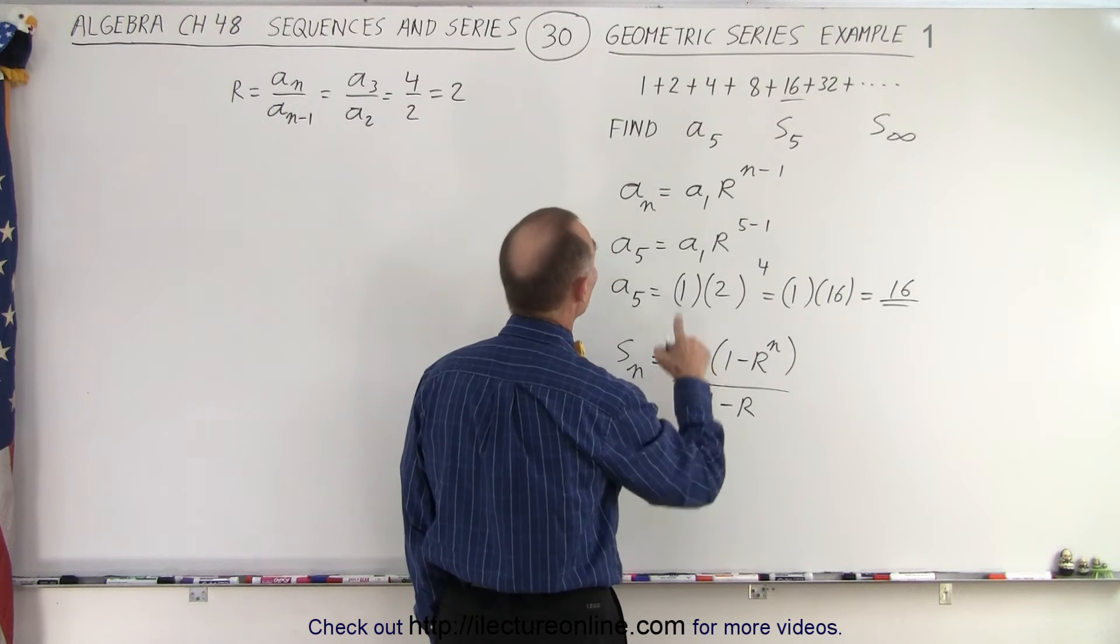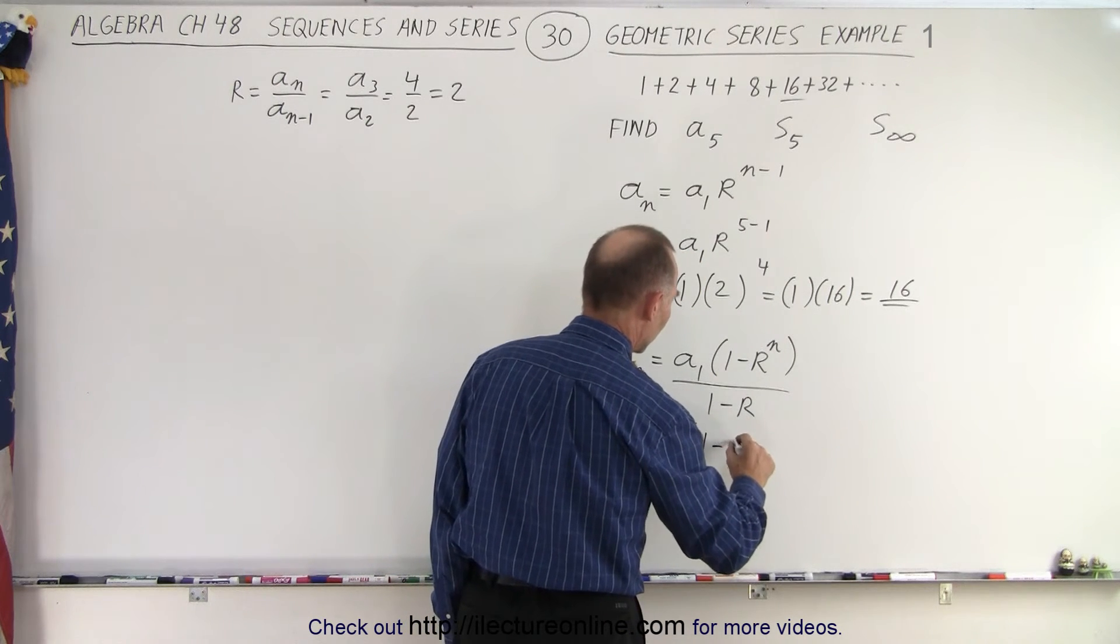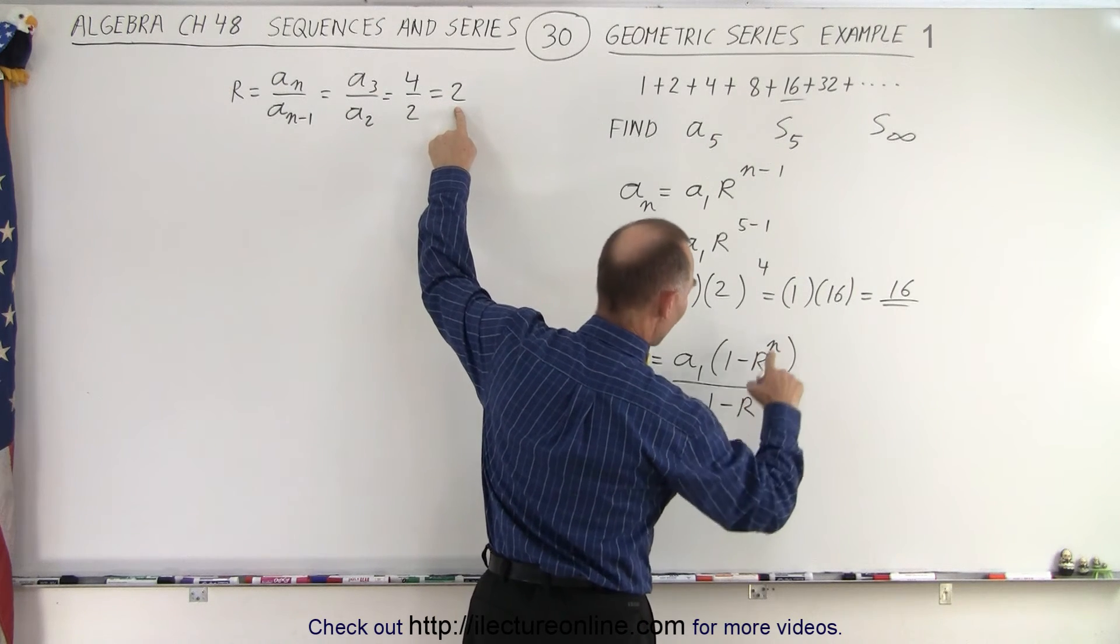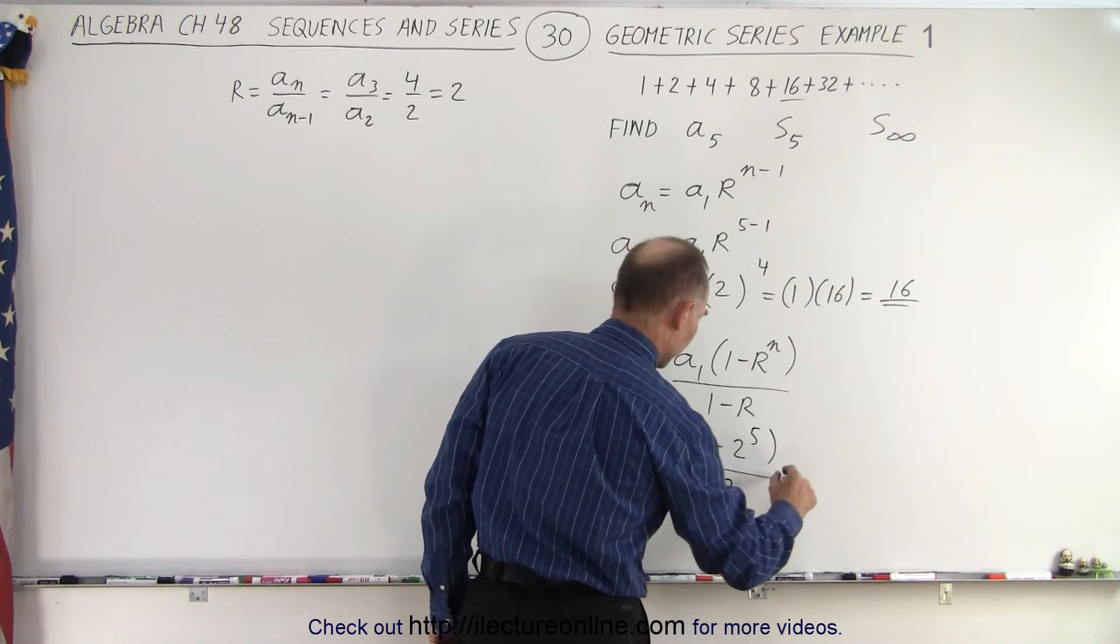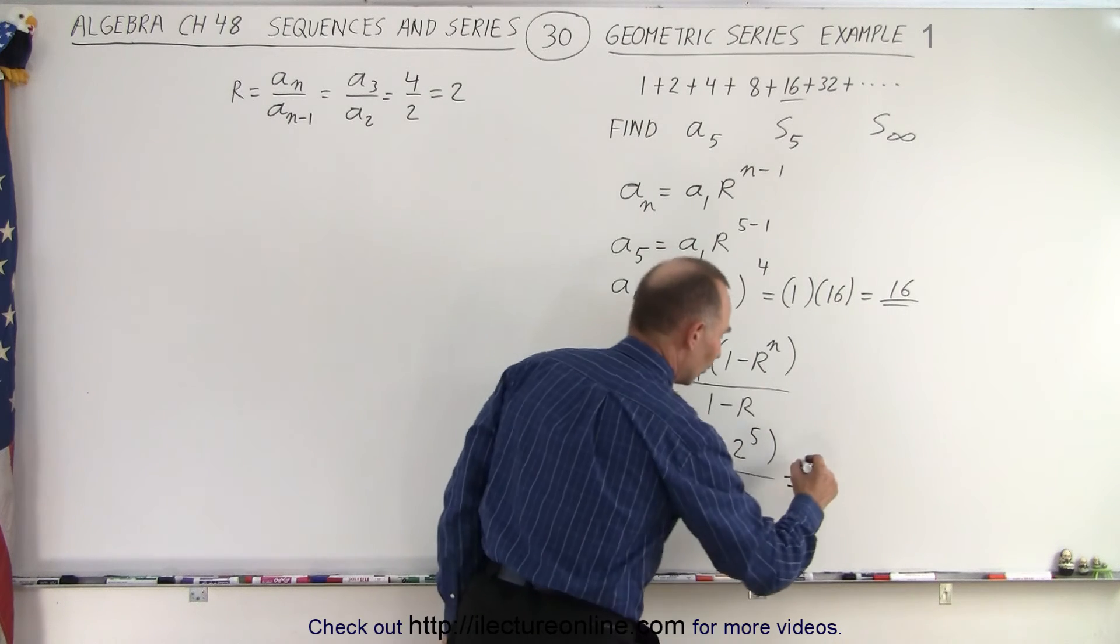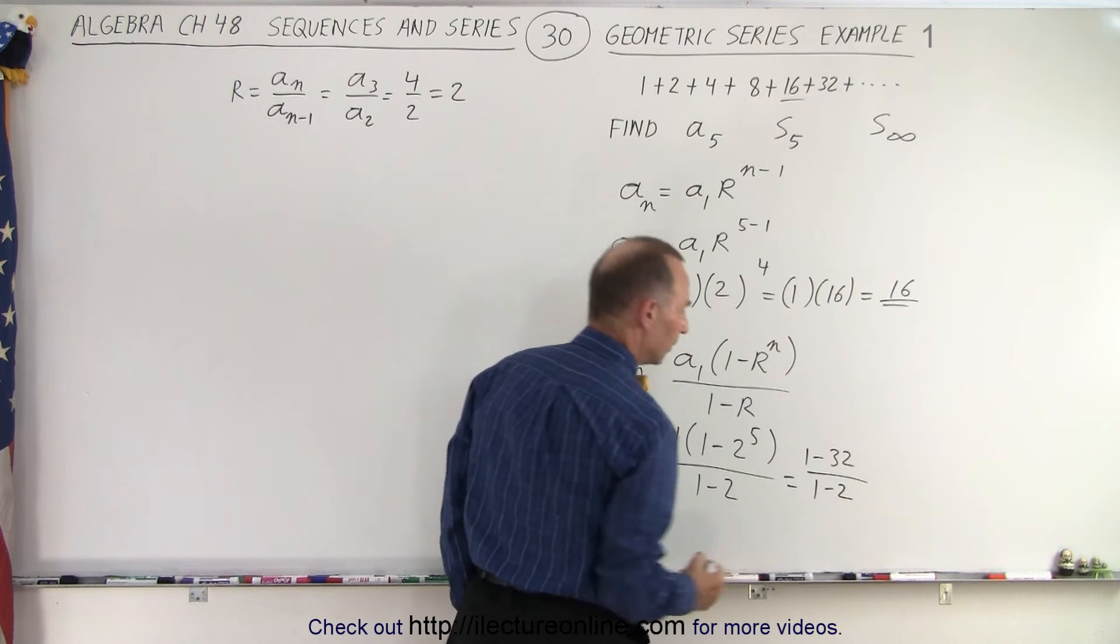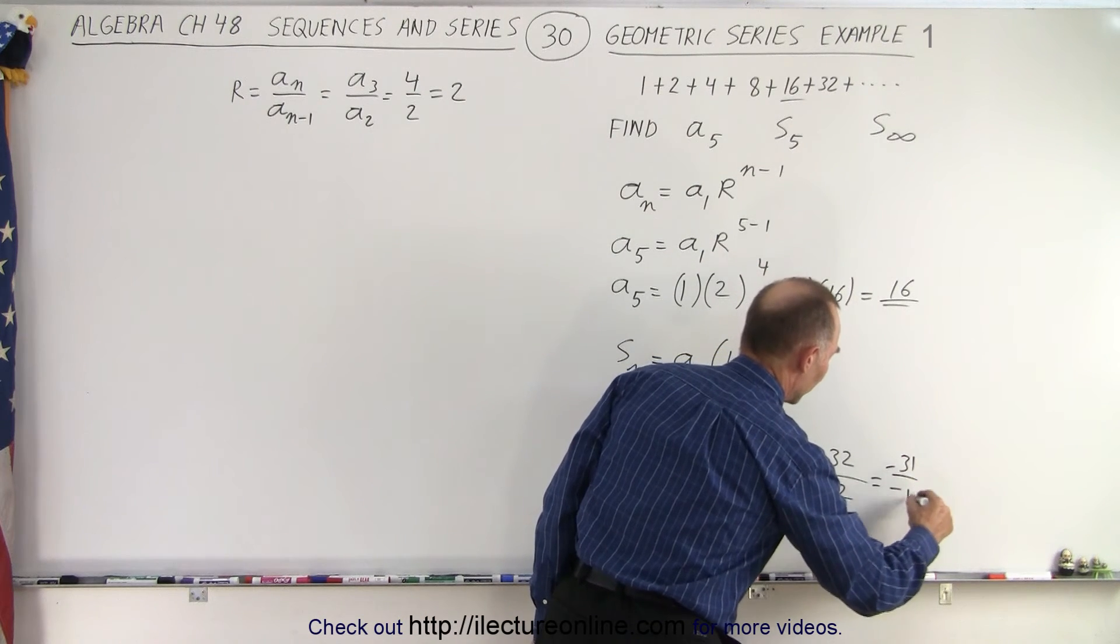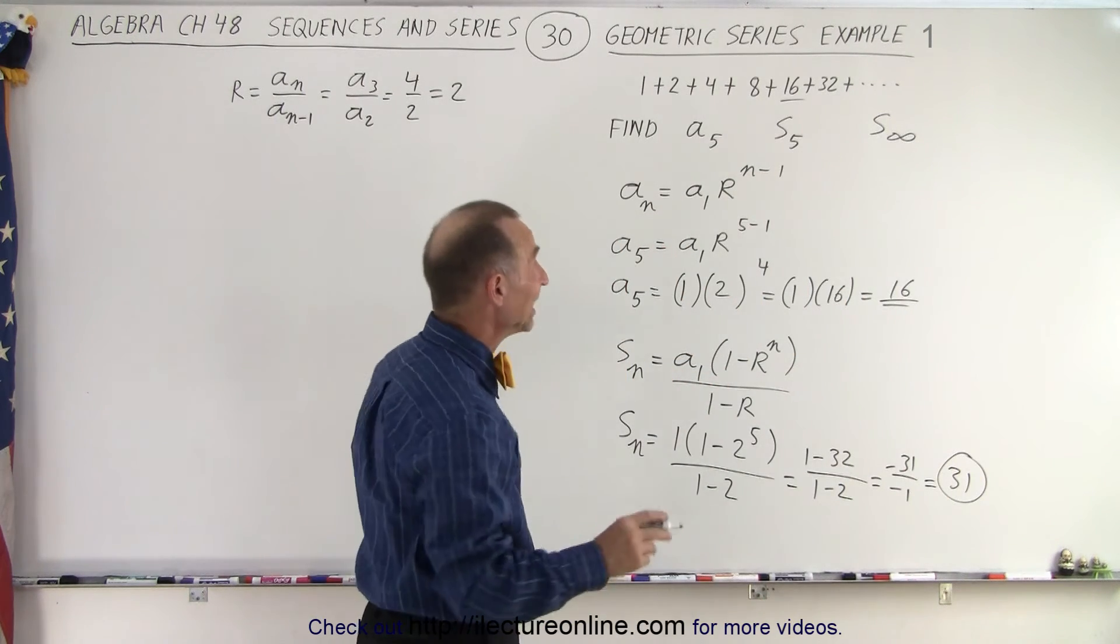that is equal to the first number, which is 1, times 1 minus R, which is 2, raised to the fifth power, divided by 1 minus 2. This is equal to 1 times 1 minus 32 divided by 1 minus 2, which is minus 31 divided by minus 1, which is 31. The sum of the first five terms equals 31.